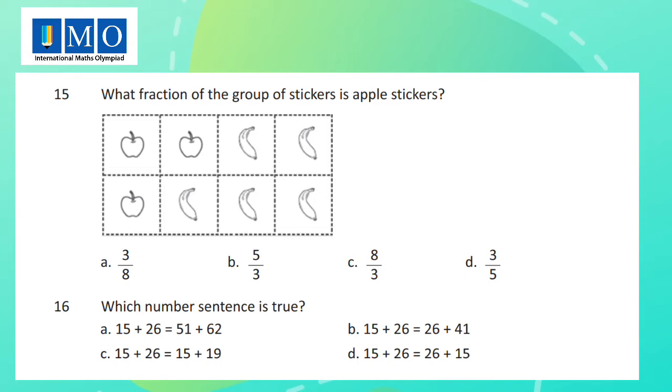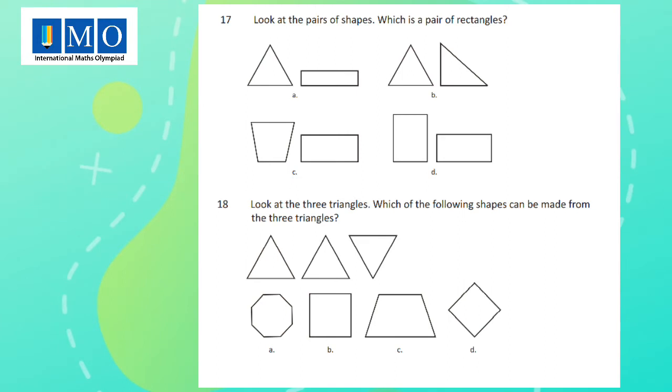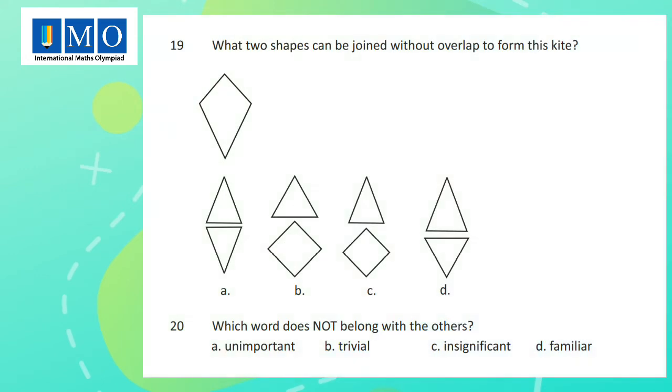Question 16: Which number sentence is true? Question 17: Look at the pair of shapes. Which is a pair of rectangles? Question 18: Look at the three triangles. Which of the following shapes can be made from the three triangles? Question 19: What two shapes can be joined without overlap to form this kite?